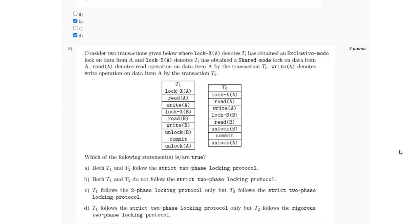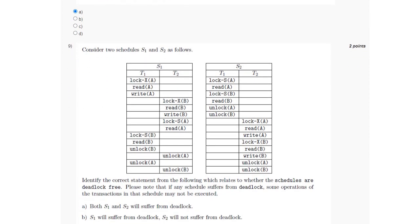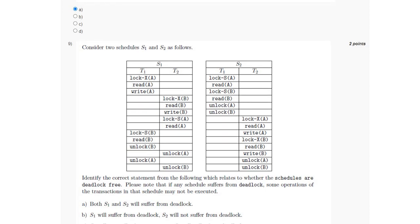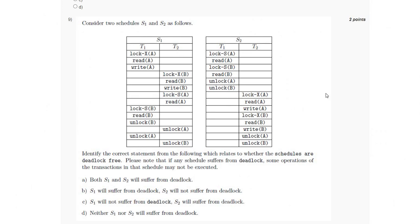For the 9th question, we have been given two schedules S1 and S2, and we have to identify which schedule will suffer from deadlock. In S2, T1 has acquired a shared mode lock on A and a shared mode lock on B, and T2 releases the locks on data items A and B, then T2 acquires the exclusive mode lock on A and exclusive mode lock on B — granted to T2 — and no deadlock occurs in S2. But in S1, deadlock will occur. So the answer is option B: S1 will suffer from deadlock and S2 will not.